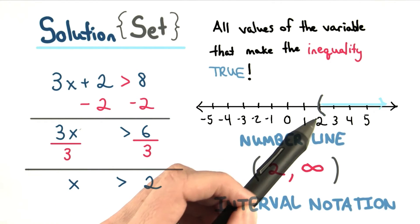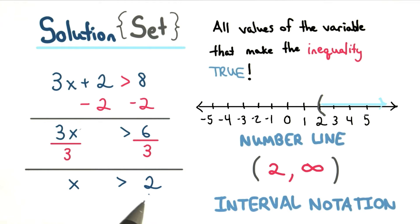We use an open parentheses at x equals 2 because x can't actually equal 2. It's got to be bigger than 2. And then we draw an arrow in the direction of the numbers that are all bigger than 2.